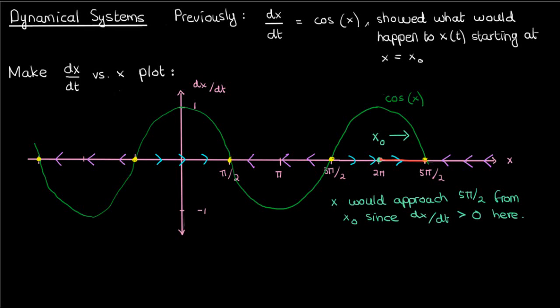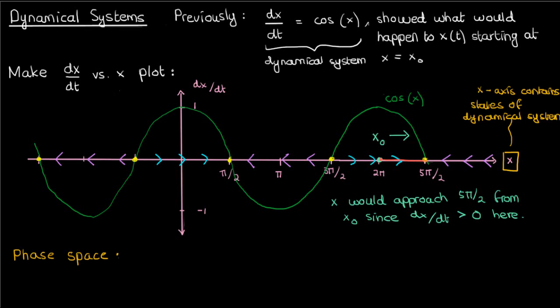First off, the x-axis in this graph here contains all the possible solutions that this differential equation could have, all the possible points that solutions of this differential equation could pass through. In other words, the x-axis contains all the possible states of the dynamical system. This is what we call a phase space.